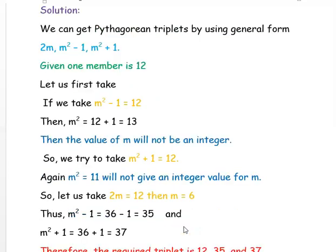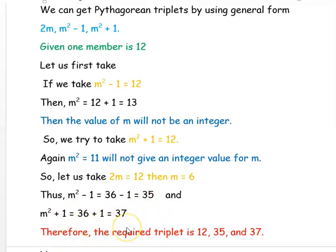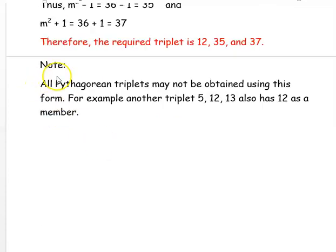So we take 2M = 12, giving M = 6. Then M²−1 = 36−1 = 35, and M²+1 = 36+1 = 37. Therefore, the required triplet is 12, 35, and 37. An important point: not all Pythagorean triplets can be obtained using this formula. For example, 5, 12, and 13 also has 12 as one of its members.